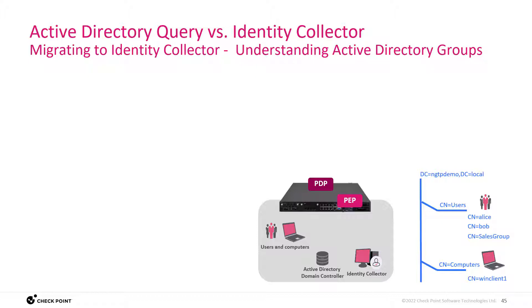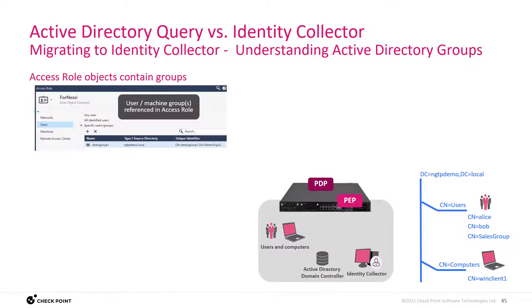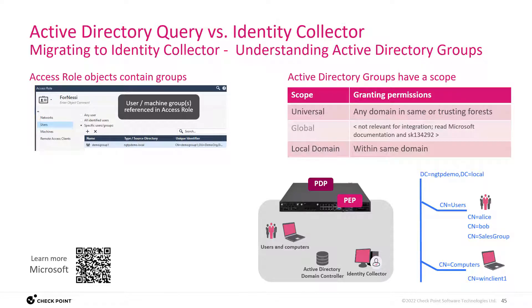Most importantly, understand that your Active Directory has groups and organizational units, and that in the Access All object we refer to these groups or organizational units. You want to understand that there are different types of groups: local domain, global, or universal. The use of universal groups has advantages compared to the use of local domain groups.